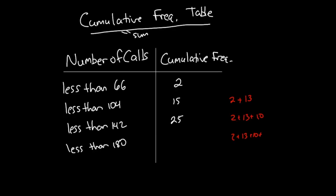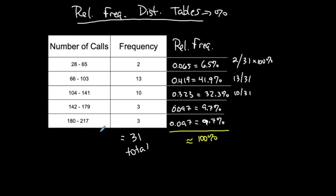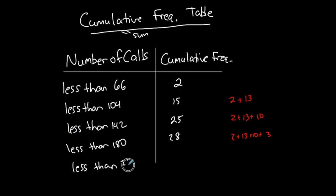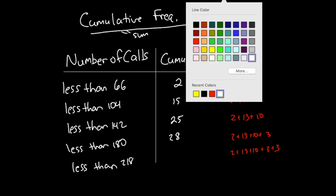How many are less than 180, the next lower class limit? We had the 2, the 13, the 10, and now another 3, giving 28 total less than 180. For the final row, since the last class ends at 217, the imaginary next lower class limit would be 218. Adding the final 3 gives 2 plus 13 plus 10 plus 3 plus 3, totaling 31.